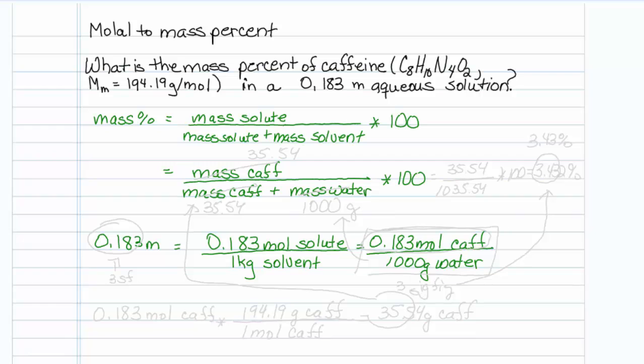Let's focus on these amounts. We have 1,000 grams water, so let me put that here, 1,000 grams of water. Now all I have to do is figure out my mass of caffeine. In every 1,000 grams of water, I have 0.183 moles of caffeine.